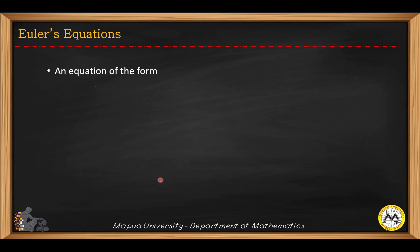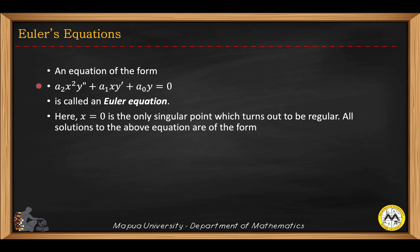Let's start with the solution of Euler's equation. An equation of this form is called an Euler equation. You can see that x equals 0 is a singular point, which turns out to be a regular singular point. You can derive the solution using the Frobenius method, and any solution will be in the form y is equal to x raised to r, which corresponds to the indicial equation.